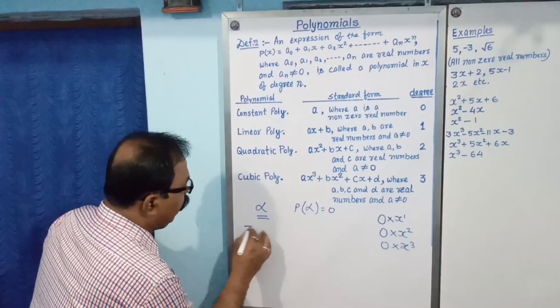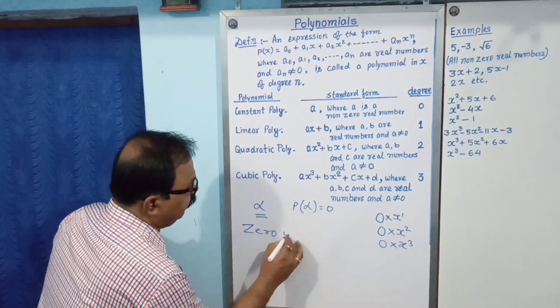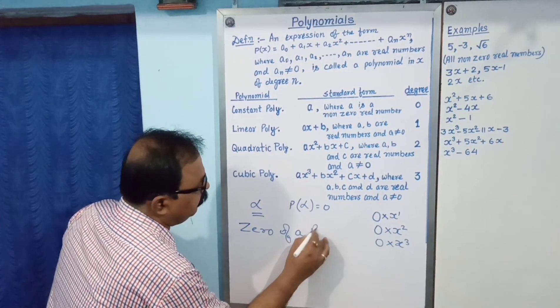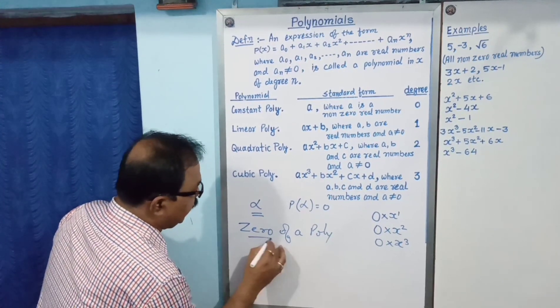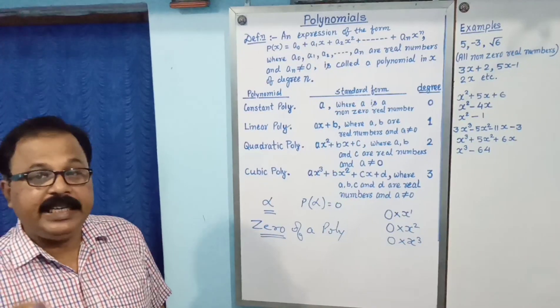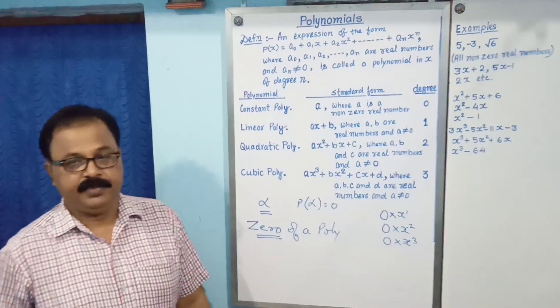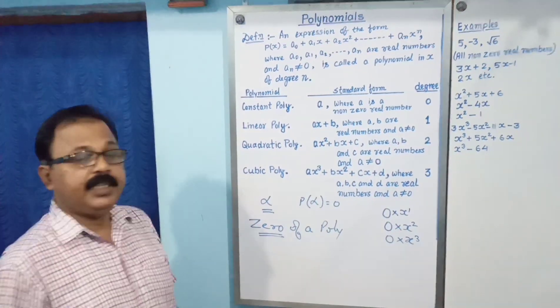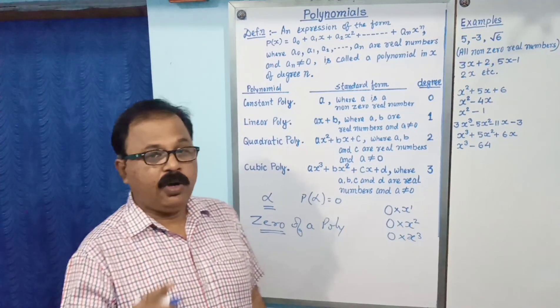But, zero of a polynomial. Here, zero, z-e-r-o, is a name. Zero of a polynomial. Definition is already...